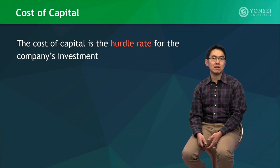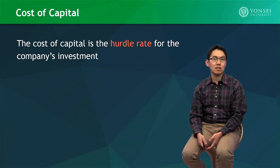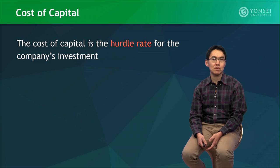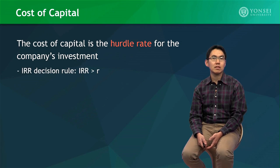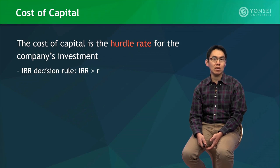Once a company identifies its cost of capital, that rate will serve as the hurdle rate for the company's investment. If the cost of capital is 20%, for example, the company should earn at least 20% on the investment. Otherwise, the company will not earn enough return to compensate its investors for lending their money. Now you will understand why we had to accept a project only if the IRR is greater than the discount rate, which is the company's cost of capital.